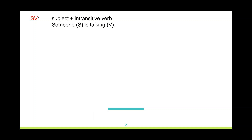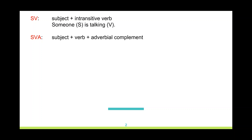The second basic structure can have a subject, a verb, and an adverbial complement. Look at the example: 'my parents' — this is the subject — 'are living' — this is the verb — 'in Chicago' — this is an adverbial complement. And again, this is according to function, because if we were to analyze 'in Chicago' according to form, it is a prepositional phrase; however, it functions as an adverbial complement.